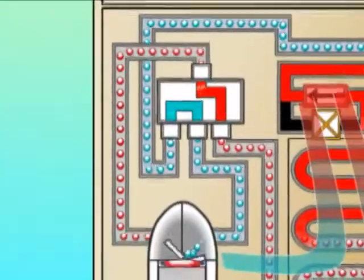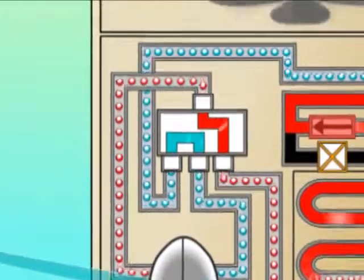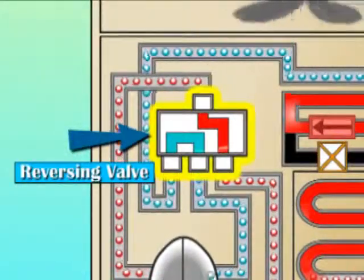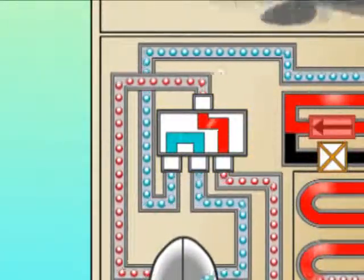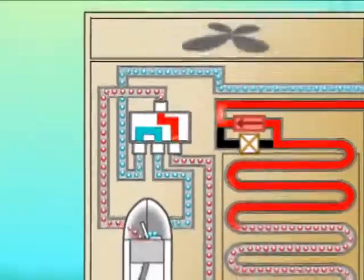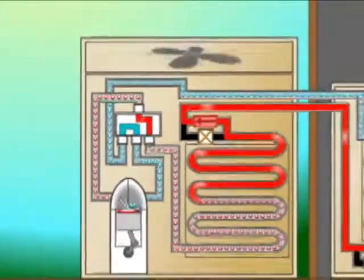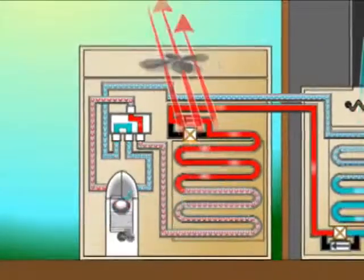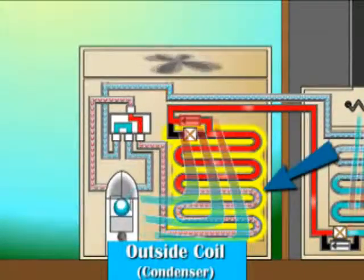now travels through a routing valve known as the reversing valve to the outside coil which functions as the condenser. In the condenser, the heat is removed from the refrigerant by the outdoor fan, causing the refrigerant to condense into a liquid.